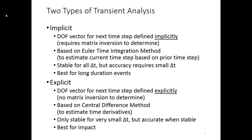Briefly reviewing this information, implicit was in the prior video that I went through. In implicit analysis, the degree of freedom vector requires matrix inversion in order to solve, very similar to static analysis, except that we're doing that at every time step. The implicit analysis was stable for all delta T, but the accuracy does require smaller delta T's, so it is a pretty good approach for long duration events.